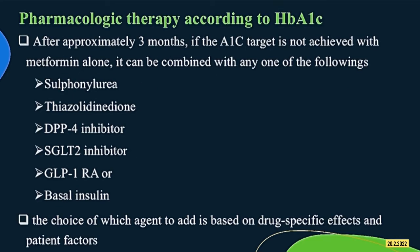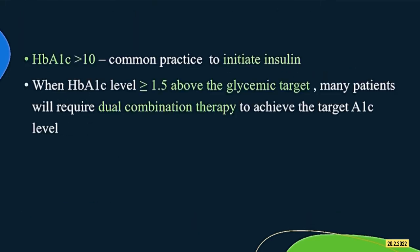Regarding pharmacologic therapy: after approximately 3 months, if the HbA1c target is not achieved by metformin alone, it can be combined with any one of the following drugs — sulfonylurea, thiazolidinedione, DPP-4 inhibitor, SGLT-2 inhibitor, GLP-1 receptor agonist, or basal insulin. The choice of agent to add is based on drug-specific effects and patient factors. If HbA1c is more than 10%, it is time to initiate insulin. If HbA1c is more than or equal to 1.5% above the glycemic target, dual combination therapy is required.